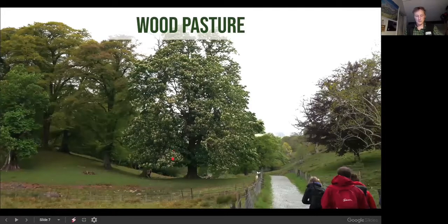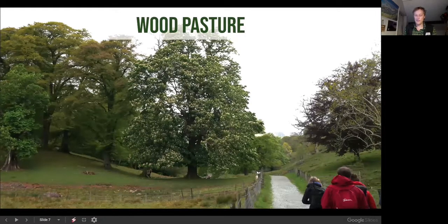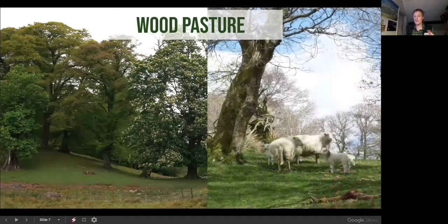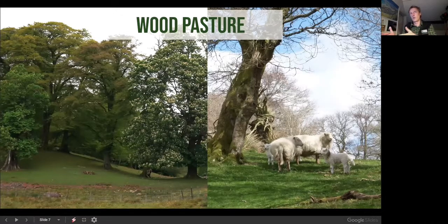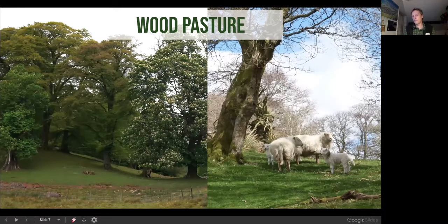A wood pasture lacks shade-adapted plants; it has grass cover and quite big trees but not permanent shade, so it's a fairly open managed environment with different grazing animals. Wood pastures have declined massively over the centuries — they've either become less grazed and more wooded through regeneration, or more grazed with less trees, and that whole agricultural land management technique has largely gone by the wayside.